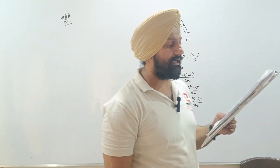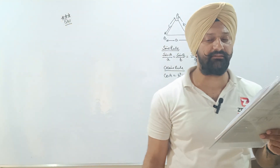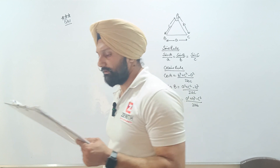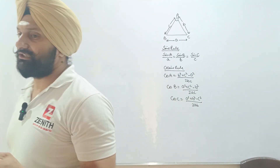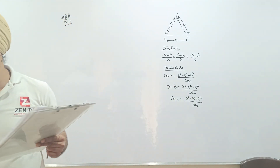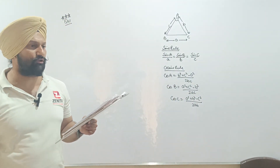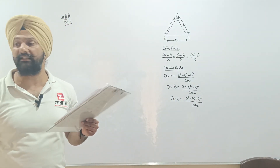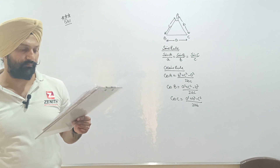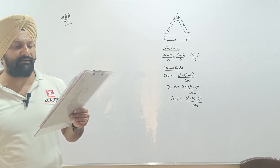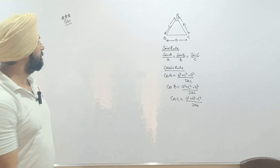Now starting the problem: two people start at the same time from the junction of two roads. The two roads are inclined at 45 degrees to each other.